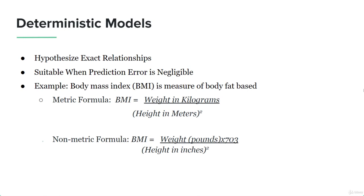The weight in kilograms and the height of a person have no random element involved — they are facts that need to be measured and quantified. After putting them in this formula, we can calculate the body mass index. The non-metric formula for BMI would be weight in pounds times 703 divided by height in inches.